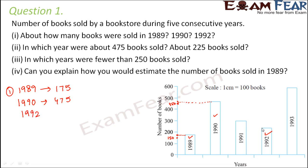In 1992, this is somewhere at this point. Here also this would be 250. This point lies between 250 and 200, that means it is at 225. So these were the number of books sold in 89, 90 and 92.